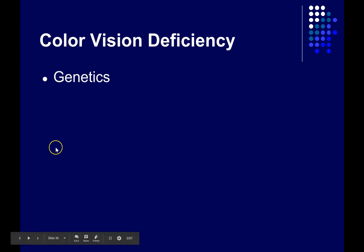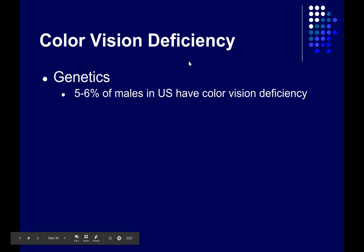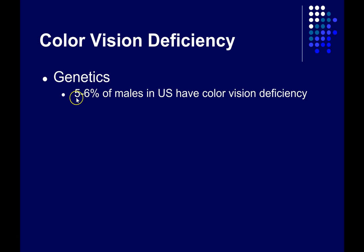Let's talk a little bit about the genetics of color vision deficiency. You probably know that it's much more common in males than it is in females. Somewhere between 5 and 6 percent of the males in the U.S. have some form of color vision deficiency, so it's a very common disorder. Among females, though, it's much, much less common.